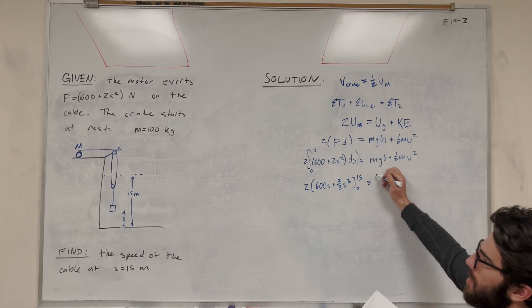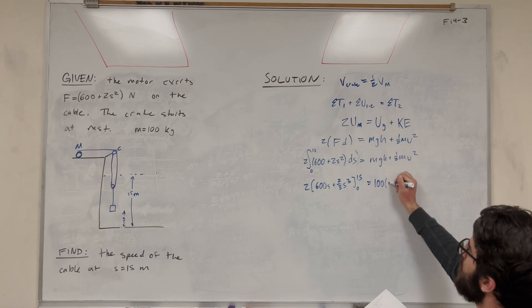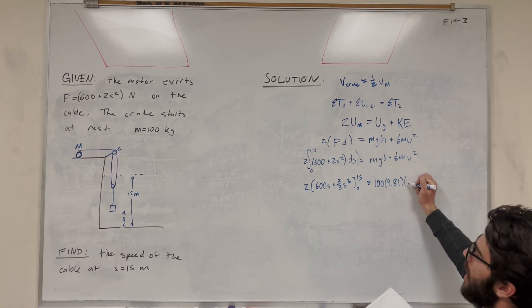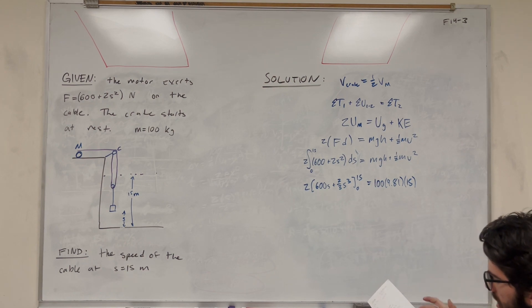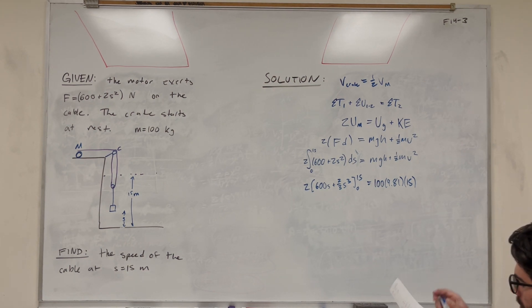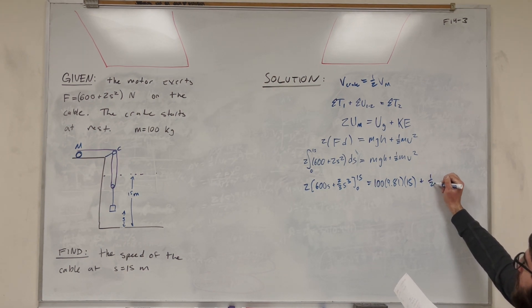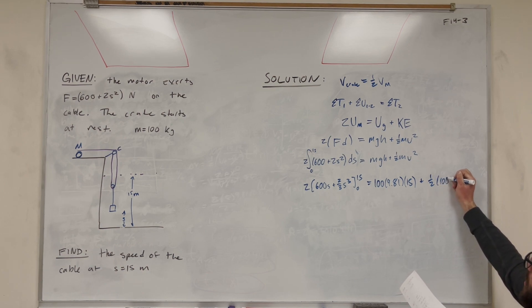It's going to become 600s plus two-thirds s to the third from zero to 15. I think what we'll do is let's plug in the numbers we know over here, 100 kilograms and 9.81. Height is 15 meters. That's the height we change to. And this is going to be one-half mass is 100, and then velocity, final, squared. So we're solving for it.